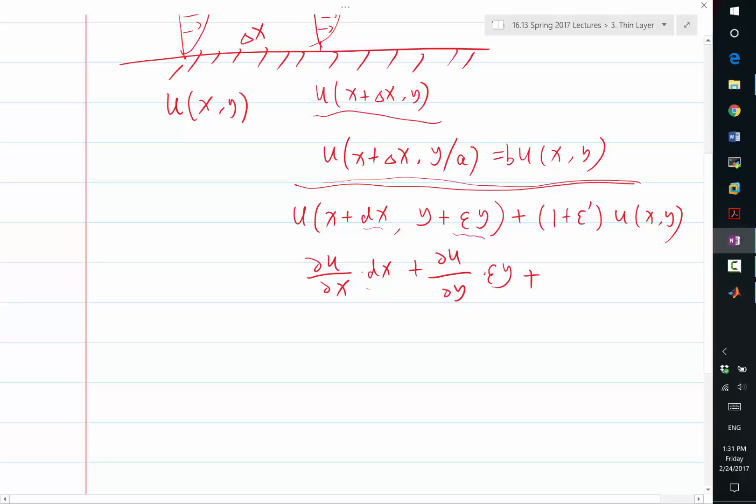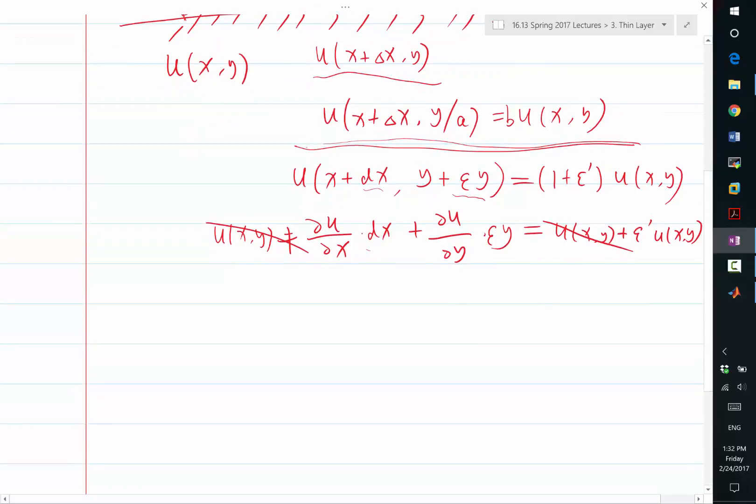This should be equal to, if I write out the whole Taylor series, this will be u of x and y. So if I write down the whole Taylor series, this will be u of x and y plus epsilon prime times u of x and y. So this term is the same on both sides.